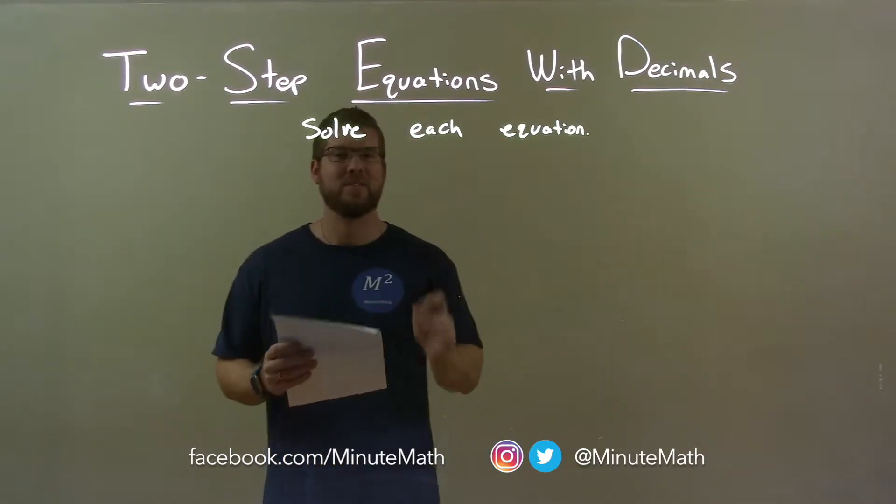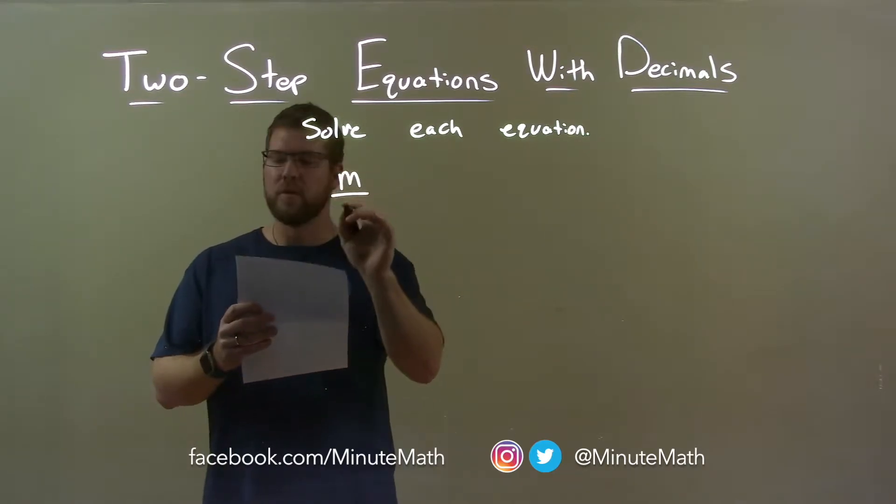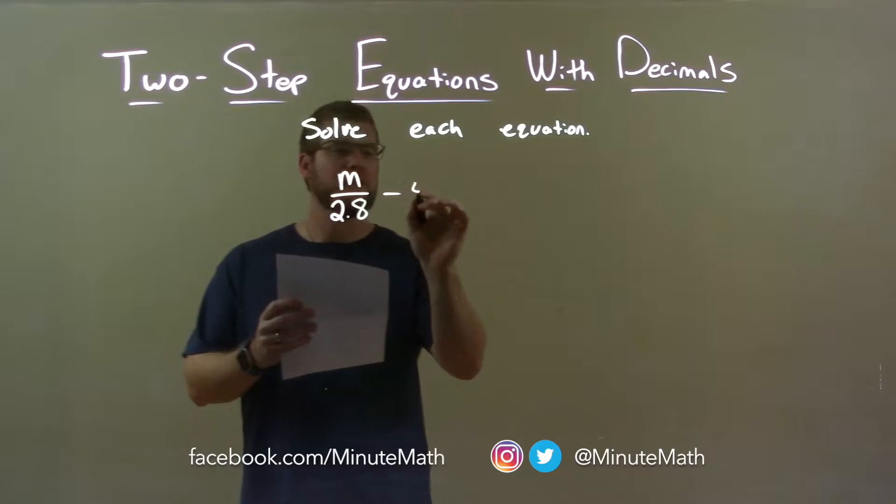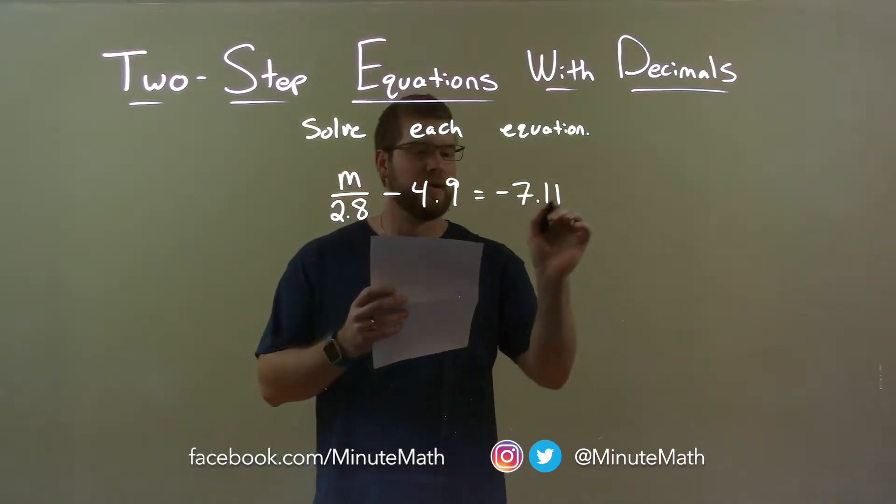Now, if I was given this equation, m over 2.8 minus 4.9 equals negative 7.11.